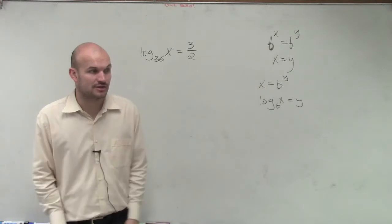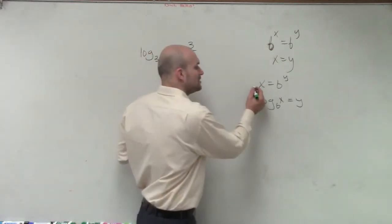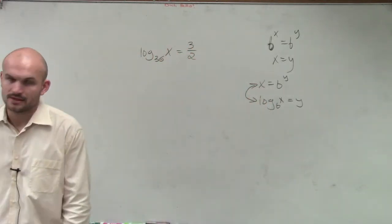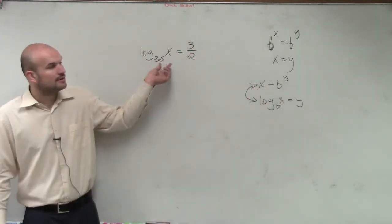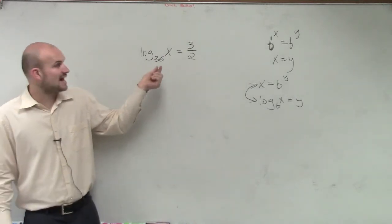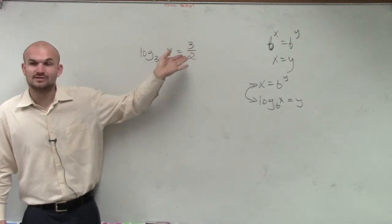So far, that's all we've learned how to do. We know how to use our equality property when we add exponents, and then we learned how to transfer between exponential and logarithmic form. So what this is saying is, remember, logarithms, when we practice this, this says 36 raised to the 3 halves power equals x.